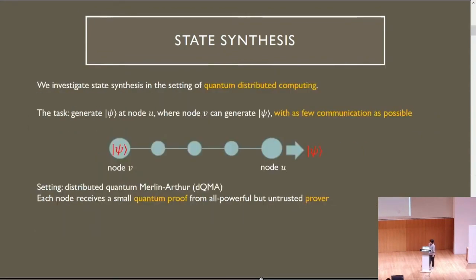In this talk, we investigate this problem in the setting of quantum distributed computing, where the task is to generate some quantum state, psi, at the rightmost node, u, where the input is given to the node v. Our goal is to generate psi with as few communications as possible.